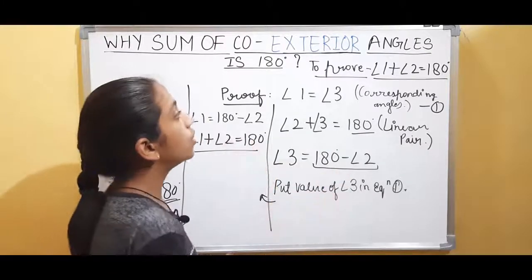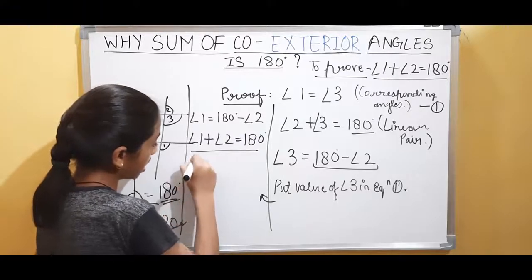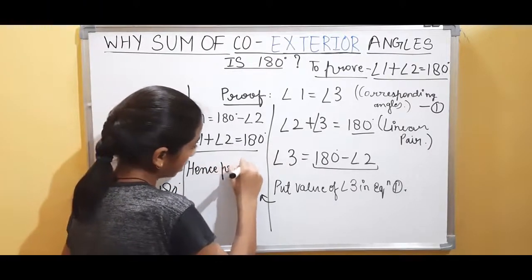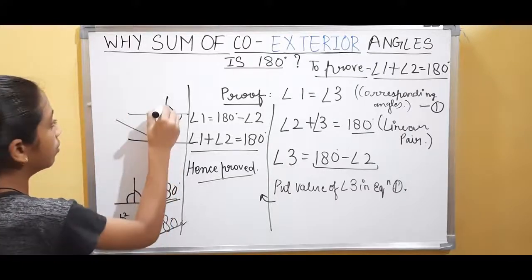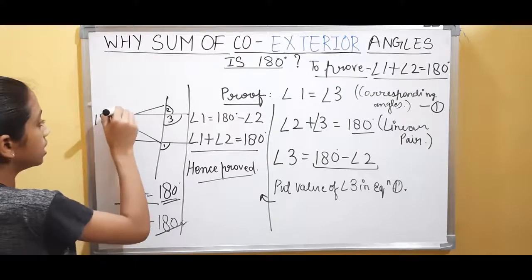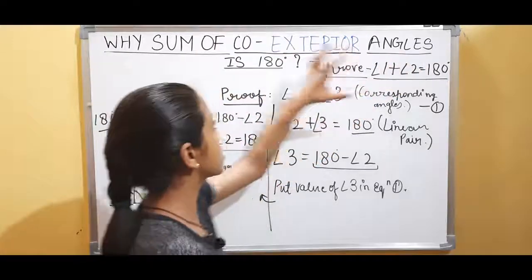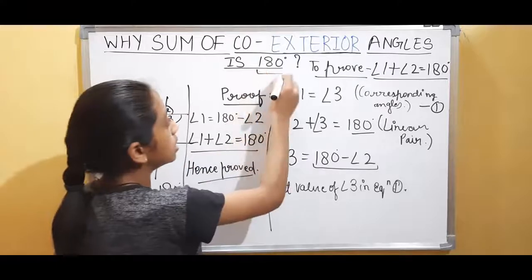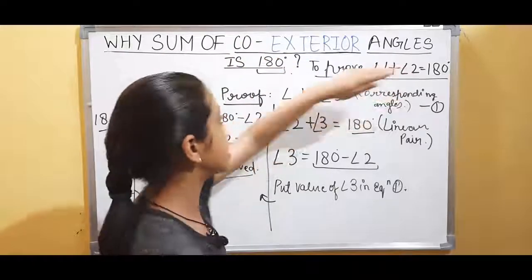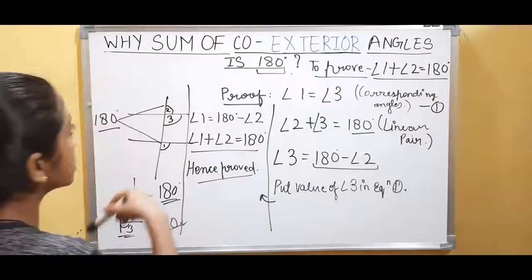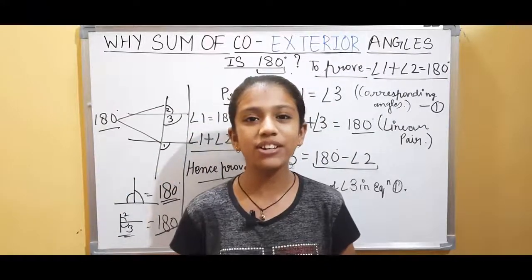We have proved that angle 1 plus angle 2 is equal to 180 degrees. The sum of co-exterior angles is 180 degrees. I think you all understood why the sum of co-exterior angles is 180 degrees, and why the sum of co-interior angles is 180 degrees. We will meet in our next video. Goodbye, thank you, take care.